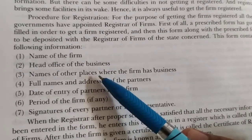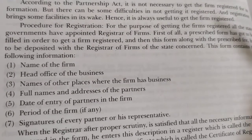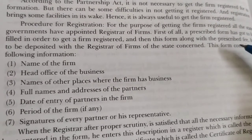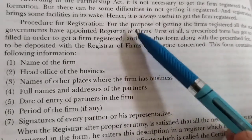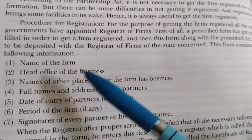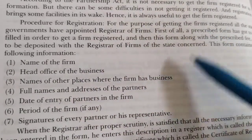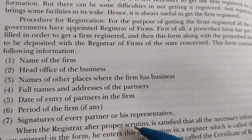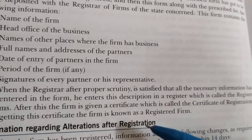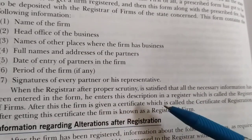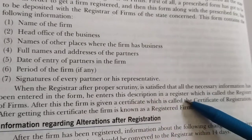जैसे हमने कोई school open करना हो, उसकी affiliation लेने से क्या फायदा है और न लेने से क्या नुकसान है? हम वहाँ जाएंगे, school की file बनाके उसके सामने present करेंगे. अगर Registrar उन files को properly check करके satisfy हो, तो certain fees लेके हमारी firm का registration कर देगा और हमें एक certificate दे देगा.